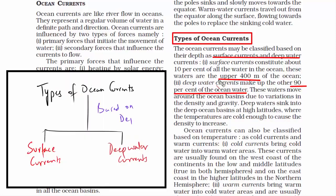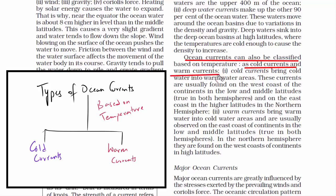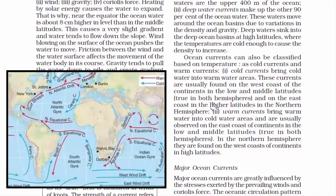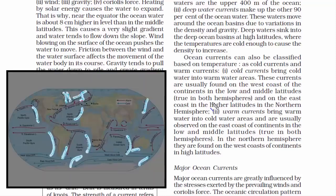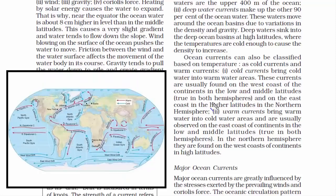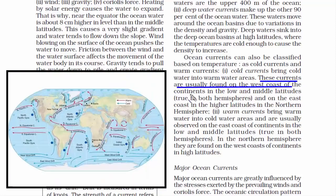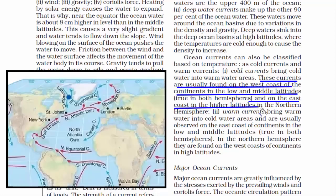Ocean currents are also classified based on temperature — cold currents and warm currents. The blue arrows on the map represent cold ocean currents and the red ones represent warm ocean currents. Most cold ocean currents are found on the west side of continents, especially in lower and middle latitudes. At higher latitudes, cold currents are found on the eastern side of the continent. In tropical regions, trade winds flow from east to west, moving the upper cold water layer of the eastern ocean towards the west — that's why the western coast of continents has cold currents.